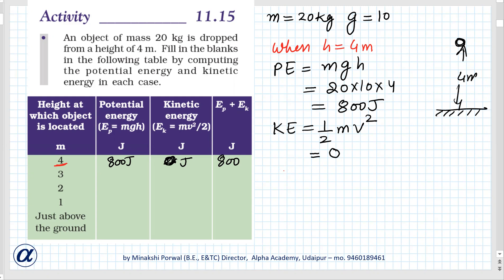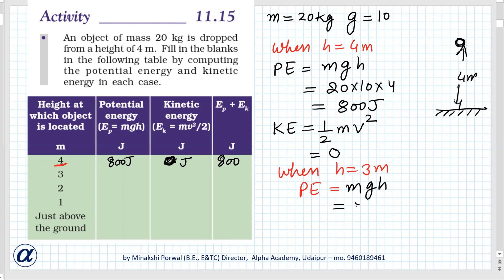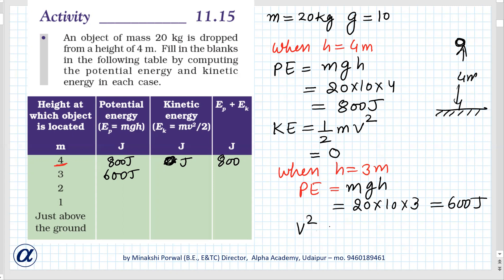Second case: when h is 3 meters. Potential energy can be directly found using mgh, so it is 20 × 10 × 3, which equals 600 joules. For kinetic energy we have the formula half mv², but we don't know what v is.